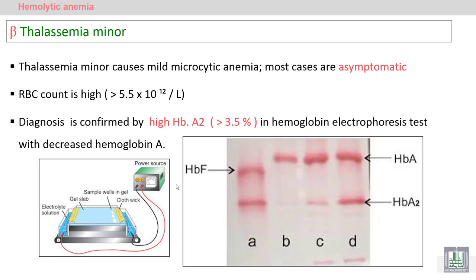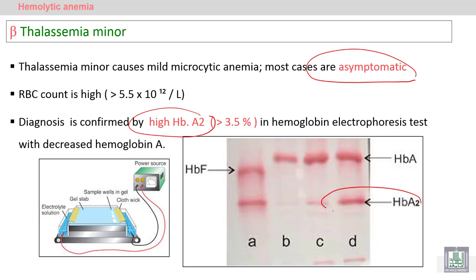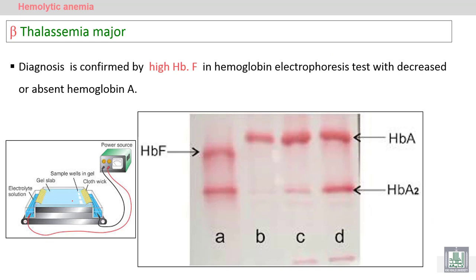Beta thalassemia minor, or trait or carrier: cases of beta thalassemia minor are asymptomatic — no complaints, no symptoms, no signs. Diagnosis is confirmed by high hemoglobin A2 on hemoglobin electrophoresis. Hemoglobin electrophoresis is a specific and confirmatory test to diagnose beta thalassemia minor, carrier, or trait.